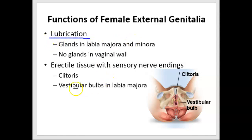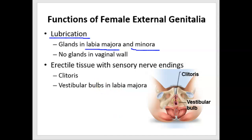What are the functions of these external genitalia organs? Primarily lubrication to receive the male penis into the vagina. There are glands in the labia majora and labia minora that secrete a fatty or oily liquid that helps prevent friction. There are no glands in the wall of the vagina, so it's important that this superficial lubrication is present so that when the penis penetrates the vagina it brings that lubrication with it.